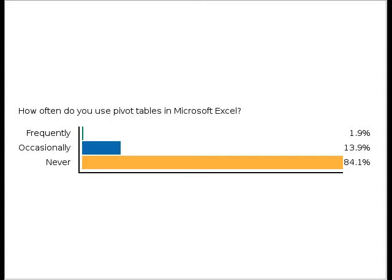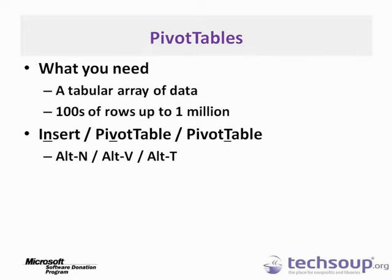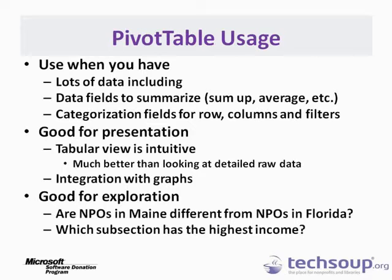Only four people said they frequently use pivot tables. If I had voted myself, there would be five because I use them constantly. So what are they? You need a tabular array of data — typically hundreds of rows, up to a million rows, because Excel allows a million rows in a spreadsheet. The way to bring up a pivot table is Insert > PivotTable. You use pivot tables when you have lots of data and data fields to summarize — things you might want to sum or average, like income or assets from the IRS file.